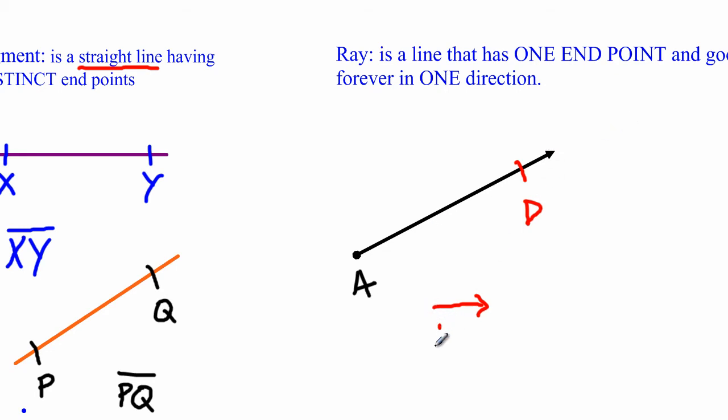So this would be my ray AD. And that's what we mean by a ray. It has a starting point, it has a point that it starts at and it continues forever in one direction. It's that easy. Other examples of rays.